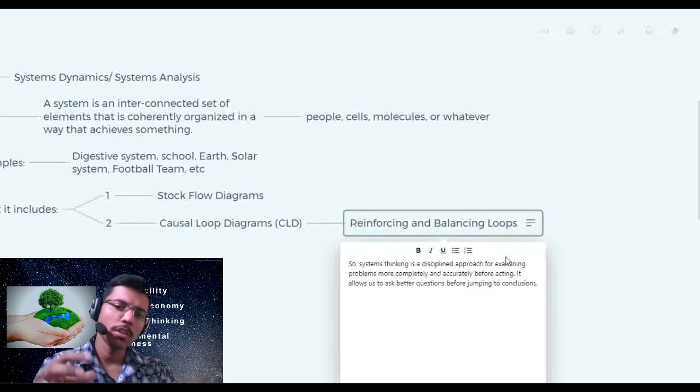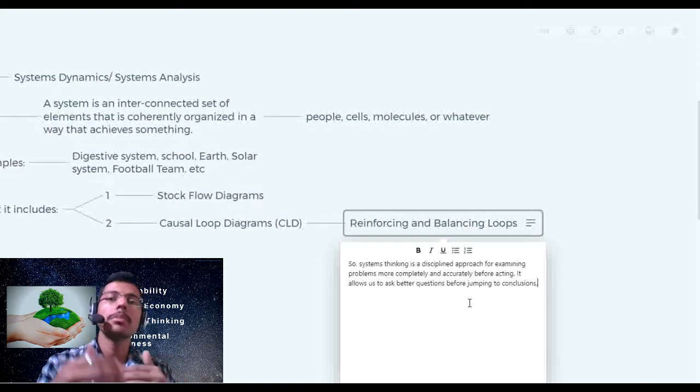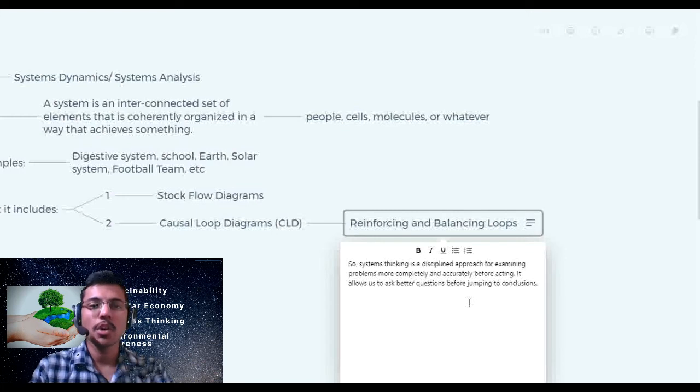Overall, the discussion about systems thinking, we can say that systems thinking is a discipline approach for examining problems more completely and accurately before acting. It allows us to ask better questions before jumping to conclusions. This is a major issue whenever we try to solve problems. We do not understand problems thoroughly and that is the cause for major problems in the coming future. That's why systems thinking helps us to visualize, to see the system as it is, and to solve the problem in a holistic way.